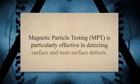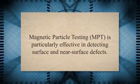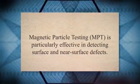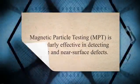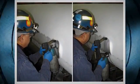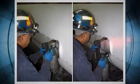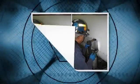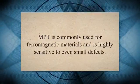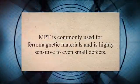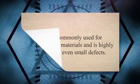Magnetic particle testing, MPT, is particularly effective in detecting surface and near-surface defects. The process involves magnetizing the weld area and applying iron particles. If there's a flaw, the magnetic field is disrupted, causing the particles to gather at the defect's location. This makes the flaw easily visible under proper lighting conditions. MPT is commonly used for ferromagnetic materials and is highly sensitive to even small defects.